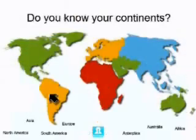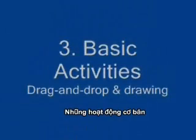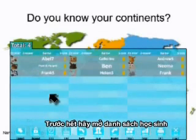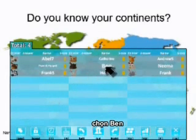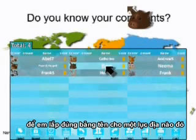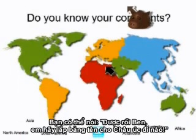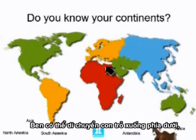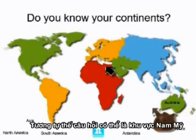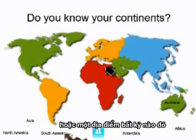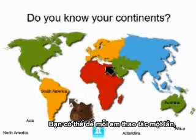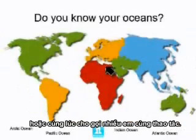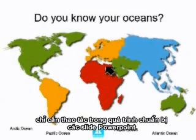The next feature allows things to be draggable and droppable. The teacher brings up the student list and chooses Ben to label some of the continents. Ben can pick up the Australia tab and label Australia, and maybe also label South America. The teacher can have one student at a time do this, or turn on just a few students, or turn them all on to do the labeling — including oceans or whatever is in the PowerPoint deck. Any object can be made draggable.